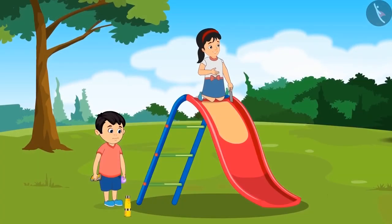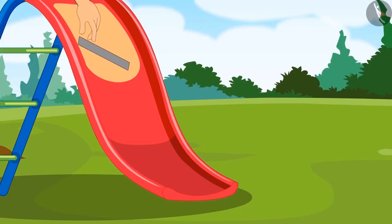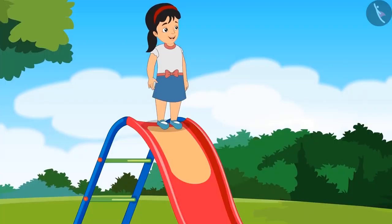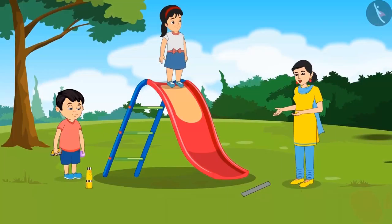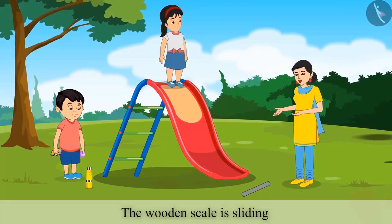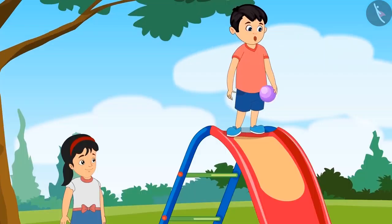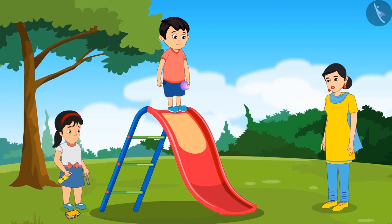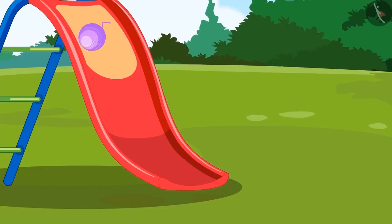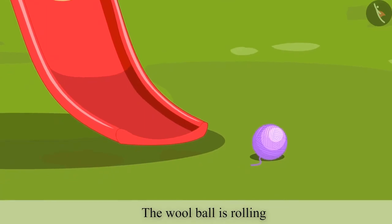Mummy, let me just try pushing this wooden scale. Look Mummy, it slid down, isn't it? Yes, Pinky, this wooden scale slid down. Mummy, may I try and push this woolen ball? Yes, Chotu, why don't you try. Mummy, this ball of wool rolled and came down.